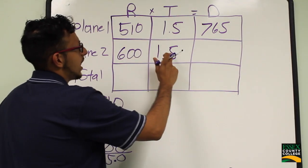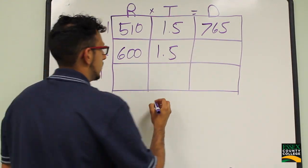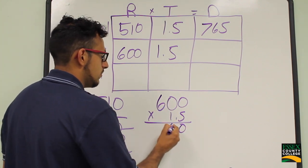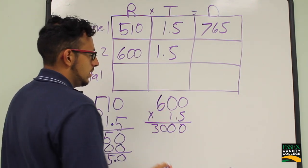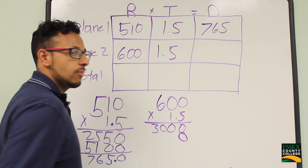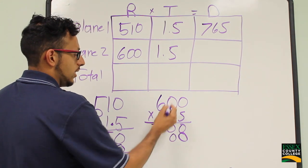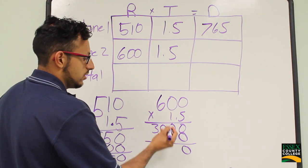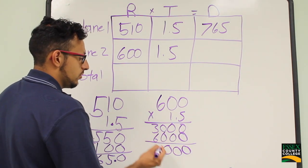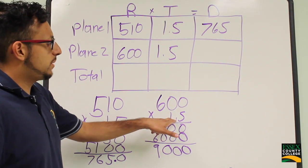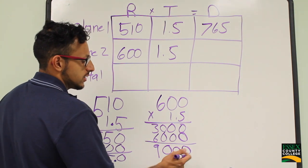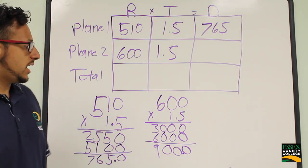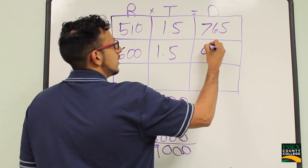Now we multiply 600 times 1.5 to get the distance for plane 2. 5 times 0 is 0, 5 times 0 is 0, 5 times 6 is 30. On the next line, starting with 0: 1 times 0 is 0, 1 times 0 is 0, 1 times 6 is 6. Adding up: 0, 0, 0, and 3 plus 6 is 9. Since we have 1 decimal spot, we move over 1 decimal spot. So 600 times 1.5 is 900.